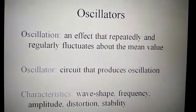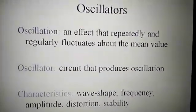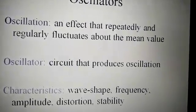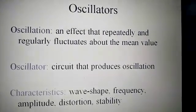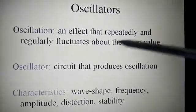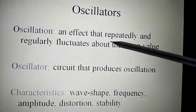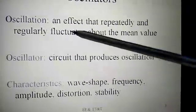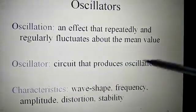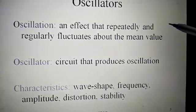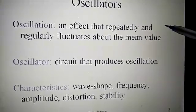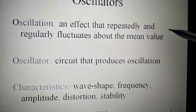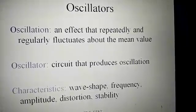What is the oscillation? You are already familiar with the sinusoidal wave. Sinusoidal wave is nothing but oscillations. Oscillation is an effect that repeatedly and regularly fluctuates about the mean value, and the circuit which produces such type of oscillation is called as the oscillator. In another way, you can say an oscillator is a circuit which generates a particular waveform or particular oscillations.